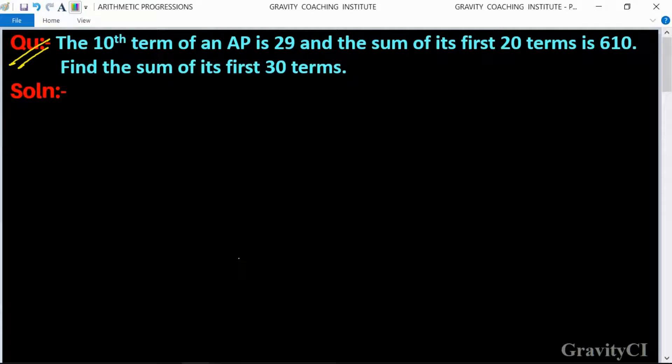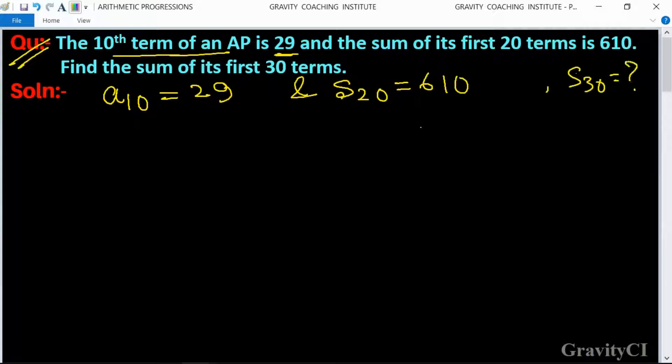The problem states: the 10th term of an AP is 29 and the sum of its first 20 terms is 610. Find the sum of its first 30 terms. So given that A10 equals 29 and S20 equals 610, we need to find S30.